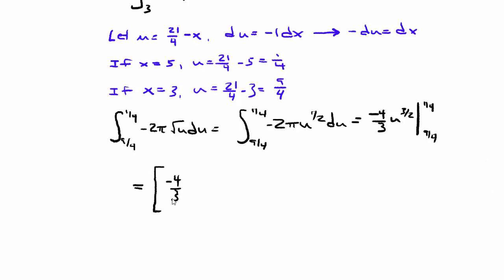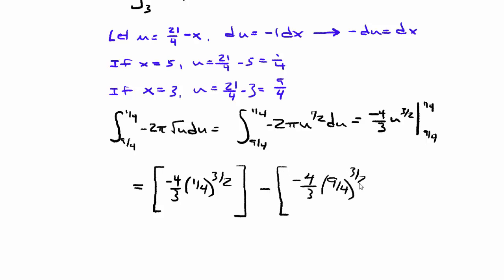I notice I forgot the π, so I bring that back in. Evaluating at the bounds gives 13/3, and then multiplying by π gives 13π/3. Going back and inserting π into the prior steps to confirm the work is correct, this completes the first method.